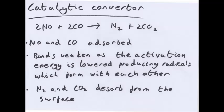Next, the catalytic converter. The internal combustion engine of cars produces carbon monoxide, nitrogen oxide, nitrogen dioxide, nitrogen trioxide and unburnt hydrocarbons.